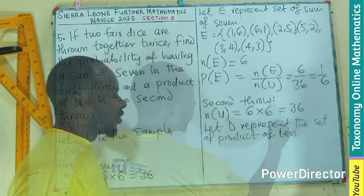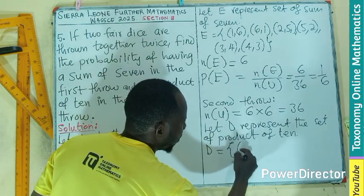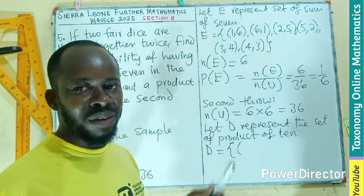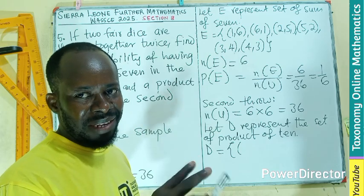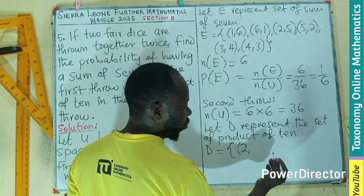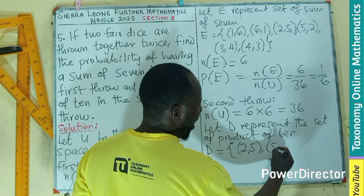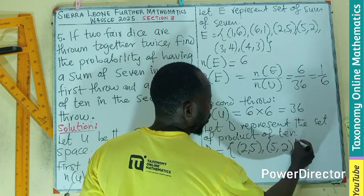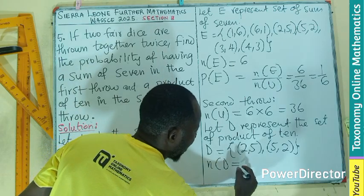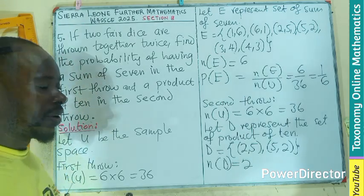...represent the product of 10. That means if I'm looking for the set product, in this case we know 10, the factors of 10 will be 1, 10, 2, 5. So we only have two numbers that can give us the product of 10, meaning 2 from the first throw on the first die, then 5 on the second, or 5 on the first and 2 on the second. That means that the number of D will also be 1, 2, 2 out there.